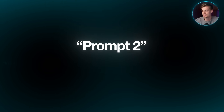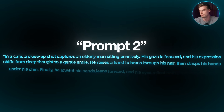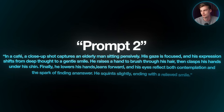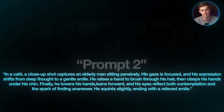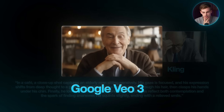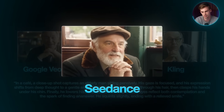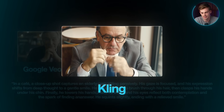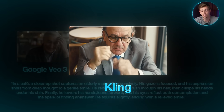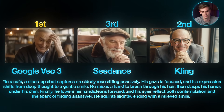The second prompt: in a cafe, a close-up captures an elderly man sitting pensively — his expression shifts from deep thought to a gentle smile, he raises a hand to brush through his hair, clasps his hands under his chin, leans forward, and ends with a relieved smile. Google VO3 follows the prompt exactly and looks quite good. Seedance is good but there's a strange moment where his hand seems to go through his head before touching his hair. Kling is also quite good — he's leaning on his hands — though the cafe setting is barely visible. Preference goes to VO3 first, then Kling, then Seedance due to the head issue.